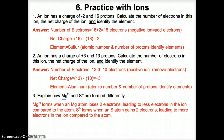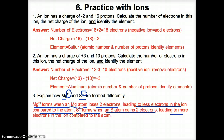Mg²⁺ and S²⁻ form differently. Mg²⁺ forms when a Mg metal atom loses two electrons based on the 2+ charge, leading to fewer electrons in the ion compared to the atom. S²⁻, on the other hand, since it is a nonmetal ion, forms when an S atom gains two electrons as implied by the 2- charge, therefore leading to more electrons in the ion compared to the atom.